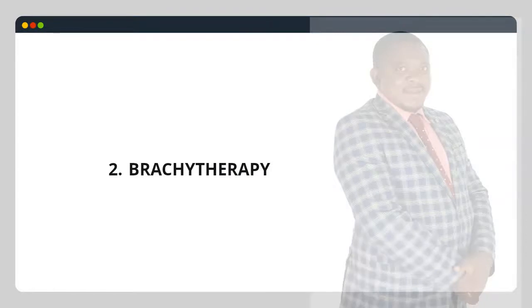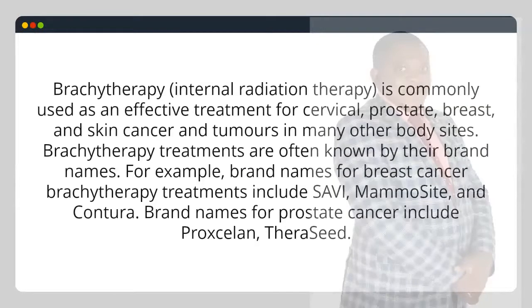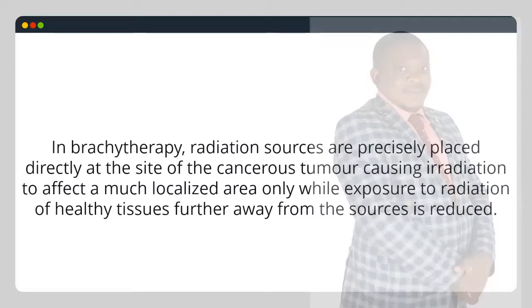2. Brachytherapy (internal radiation therapy) is commonly used as an effective treatment for cervical, prostate, breast, and skin cancer and tumors in many other body sites. Brand names for breast cancer brachytherapy include Savi, Mammosite and Contura. Brand names for prostate cancer include Proxalon and Theraseed. In brachytherapy, radiation sources are precisely placed directly at the site of the cancerous tumor, causing irradiation to affect a much localized area, while exposure to radiation of healthy tissues further away from the sources is reduced.